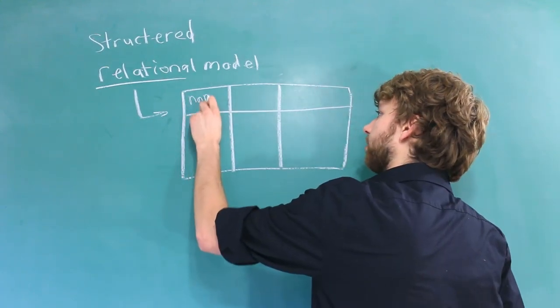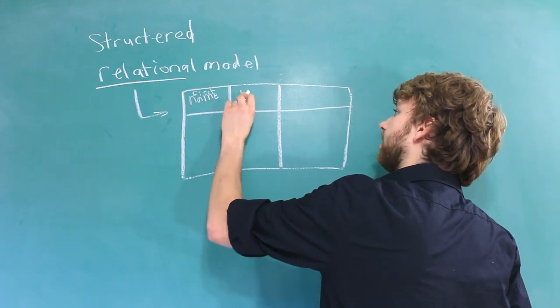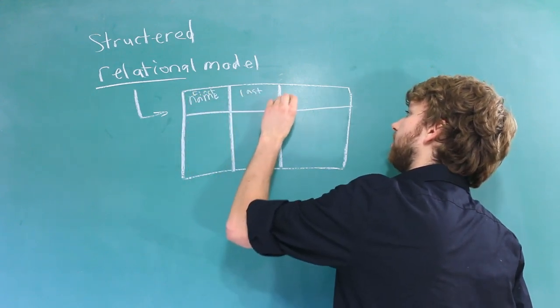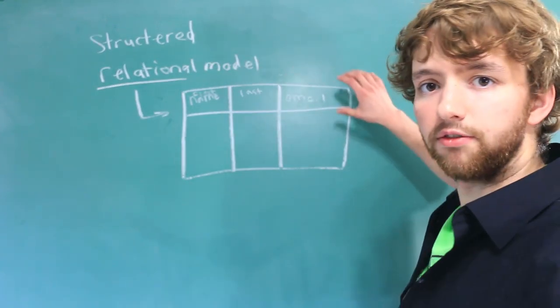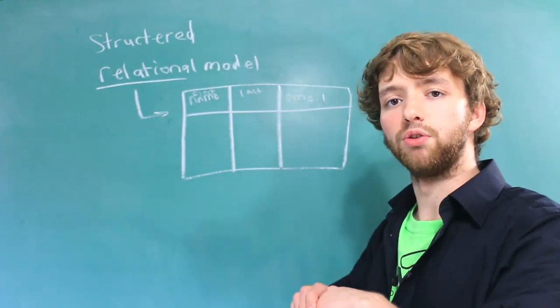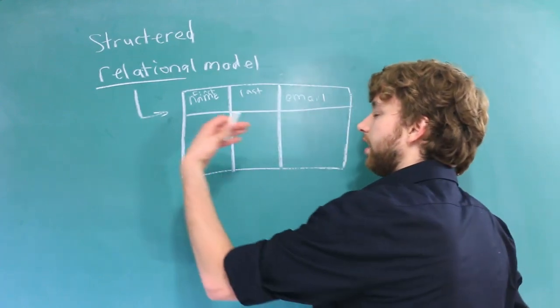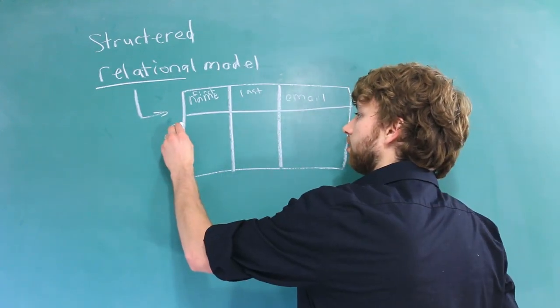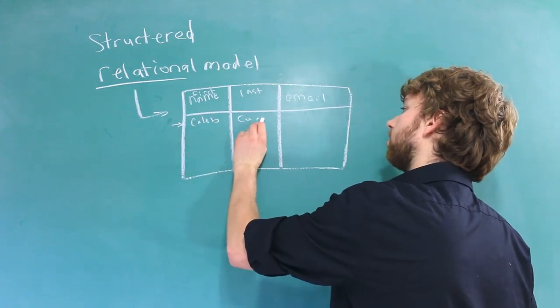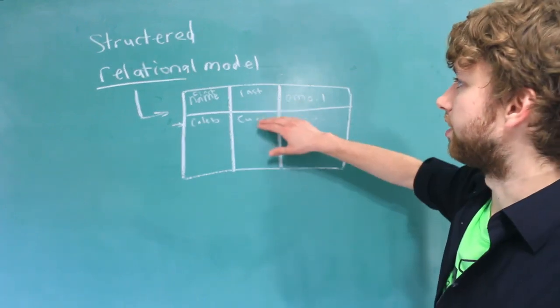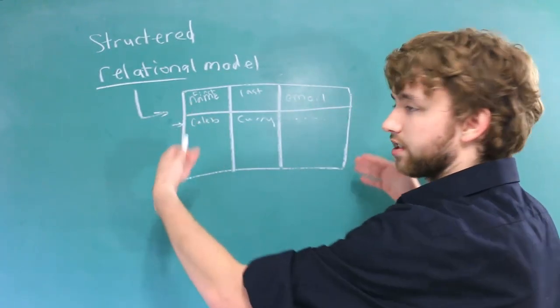So every column will have sort of like a column header. So we could have this for like a user's table, we could have a name, or a first name, and then we could have a last name, and then maybe an email. And this is essentially the blueprint for the structure of our data. Every single instance of that blueprint has to follow this structure. An instance is put inside of a row. So our first user would go here. That is an instance of our structure for this table. And every single row has to follow that structure.